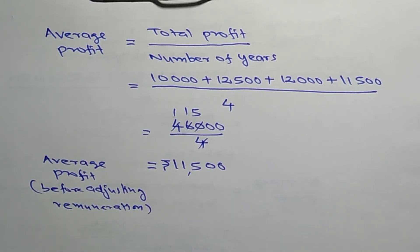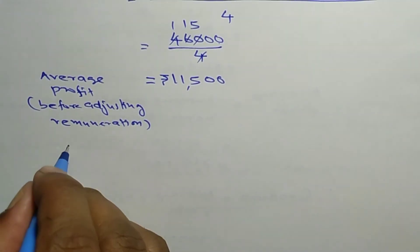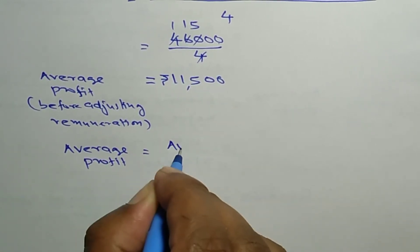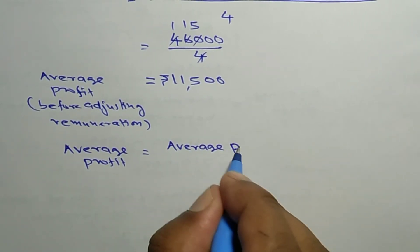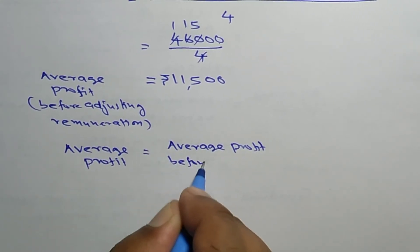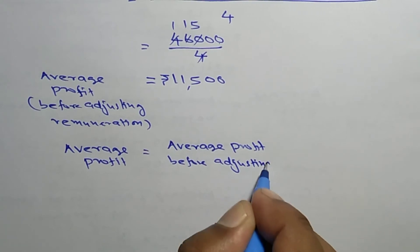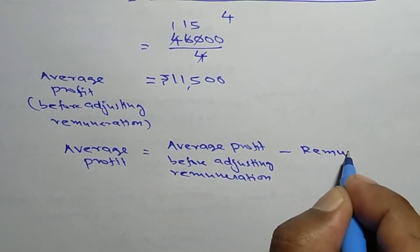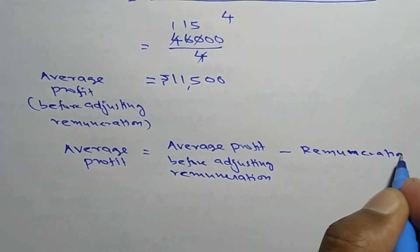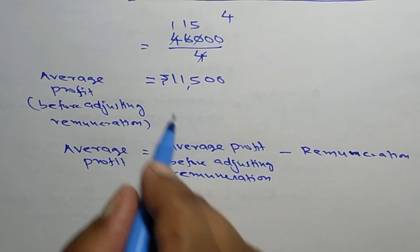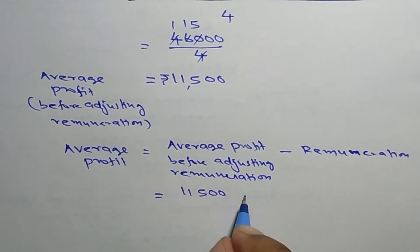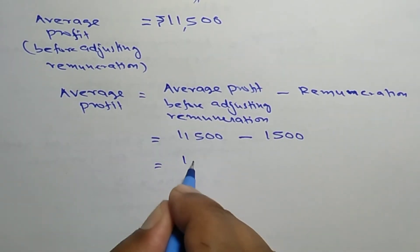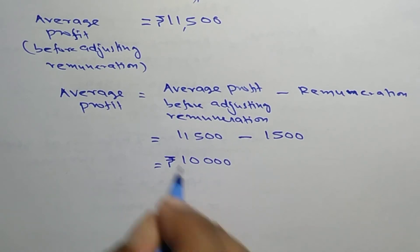Now we should adjust the remuneration. Average profit after adjustment is equal to average profit before adjusting remuneration minus remuneration. That is 11,500 minus 1,500, which equals 10,000. That is the average profit after adjusting remuneration.